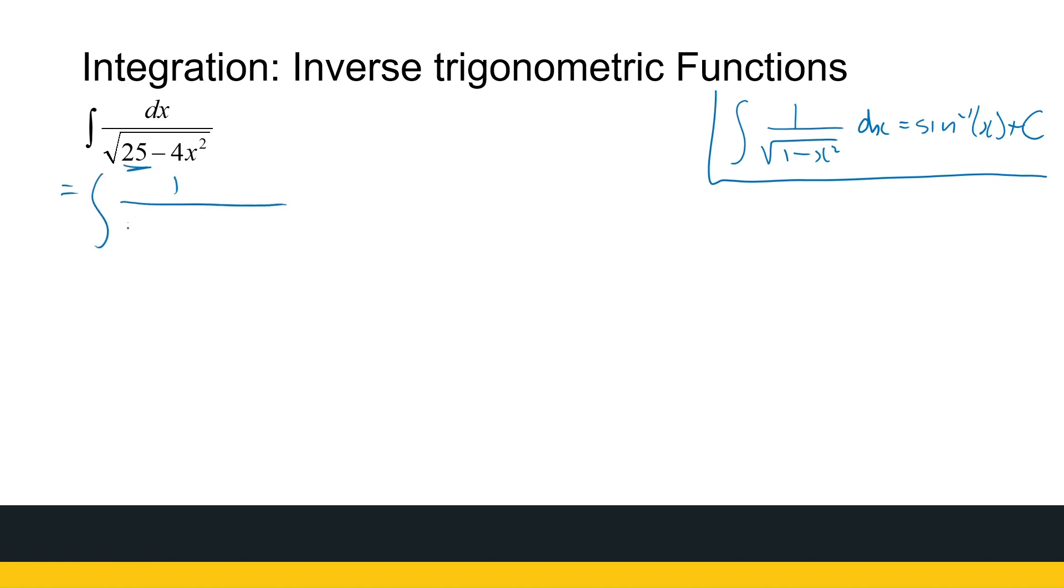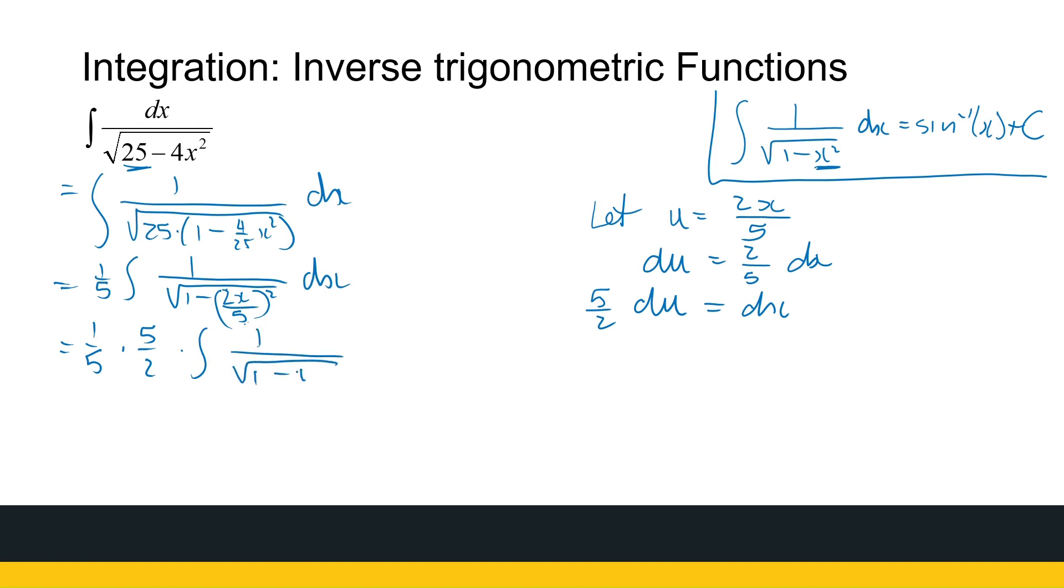Well, let's follow the same route. I need a 1 there, so I'm going to take out 25 as a common factor, and I've got 1 minus 4 over 25x squared dx. The root of 25 is just 5, so it's 1 over 5 times the integral of 1 over the root of 1 minus. Now 4x squared over 25 is the same as 2x over 5 everything squared dx. All right, so we're getting there. I need a 1 variable there, so 2x over 5 must then be equal to u. So let u be equal to 2x over 5. du is then 2 over 5 dx, so dx is equal to 5 over 2 du. So here I've got 1 over 5 times 5 over 2 times the integral of 1 over the root of 1 minus u squared du.